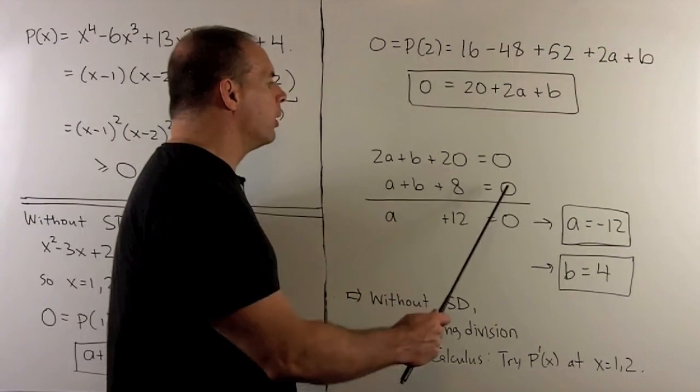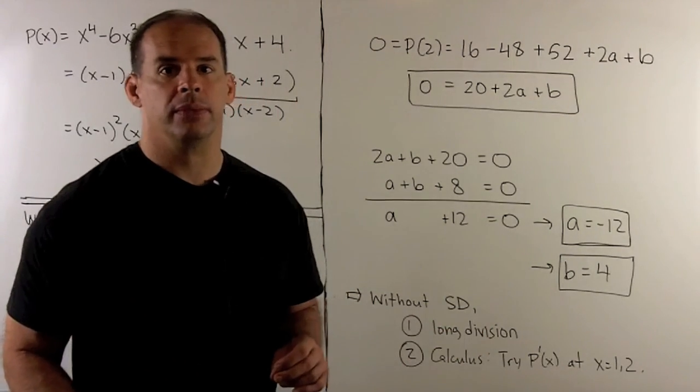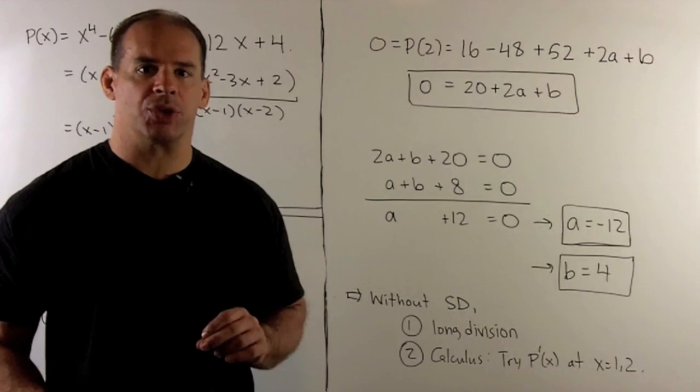We take our two equations. I'll set them up as so. Take the difference. Then I get A is equal to minus 12. We substitute back in for A. We get B is equal to 4. And that checks our previous work.